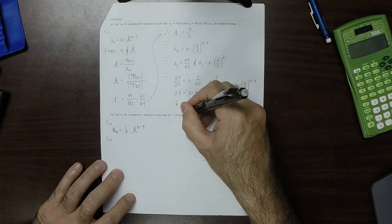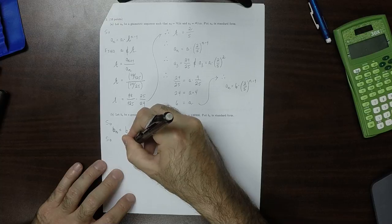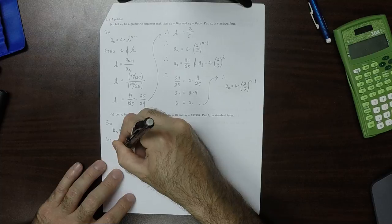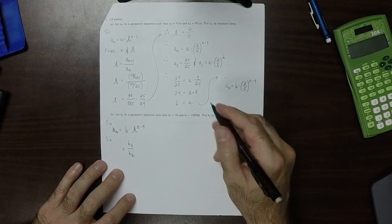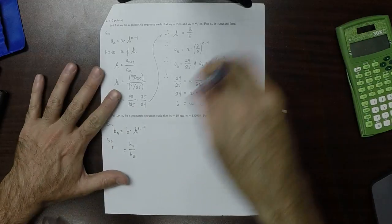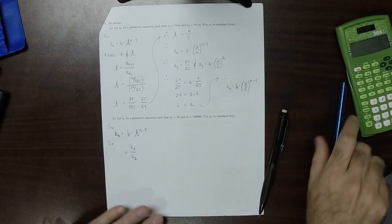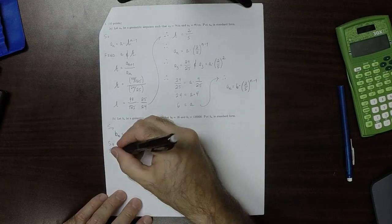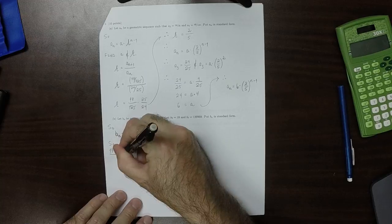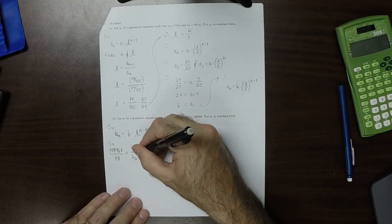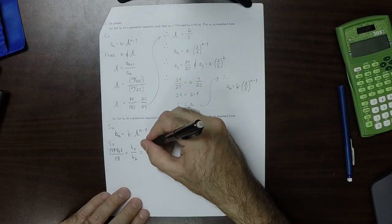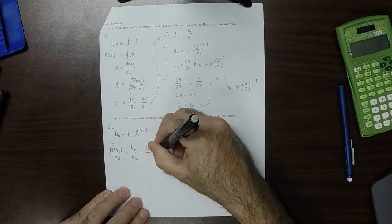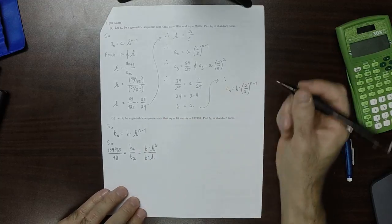So b₇ divided by b₂, on the one hand, the data is saying that it should be 13,968 over 18. And on the other hand, because it's a geometric sequence, it should be b times r to the 6 divided by b times r to the 1.